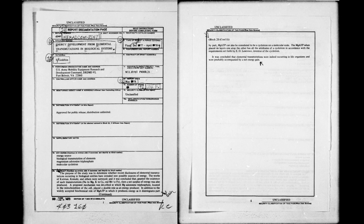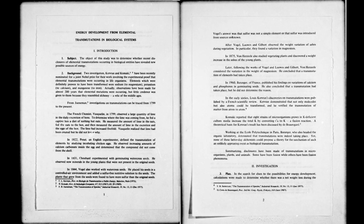The report concluded by stating that elemental transmutations were indeed occurring in life organisms and were probably accompanied by a net energy gain. The report opens by documenting the historical discovery of biological transmutation of elements and covers many of the names I have discussed in the video on biological transmutation of elements. The main investigation was split up into a number of sections.